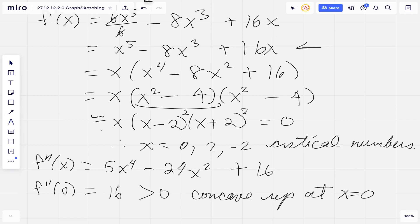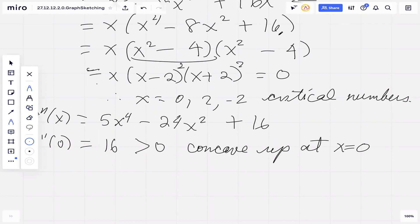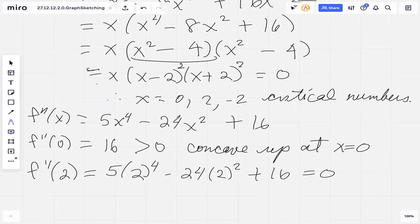I checked this a couple of times and when x equals two, our second derivative is actually equal to zero. Similarly, when x equals negative two, our second derivative is also equal to zero. So it looks like we have inflection points when x equals two and when x equals negative two.